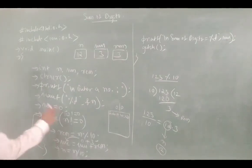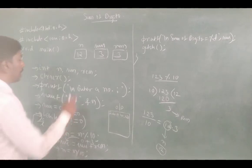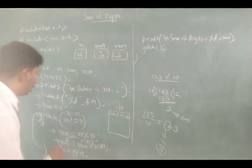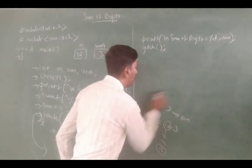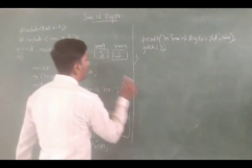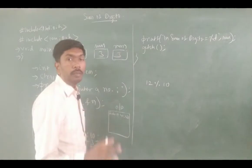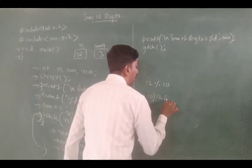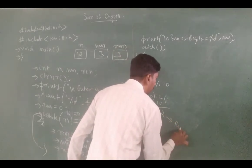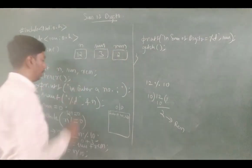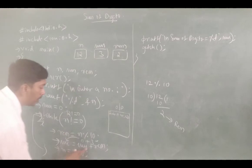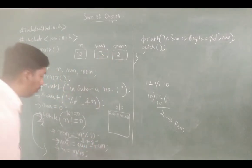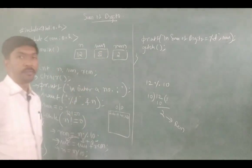Again it moves to the while loop to check the condition: n is not equal to 0. n value is 12, and 12 is not equal to 0, so condition is true. Remainder is equal to n mod 10, so 12 mod 10 — any number divisible by 10, the remainder is the last digit — so remainder is 2. Sum is equal to sum plus rem: 3 plus 2 equals 5, stored in sum.